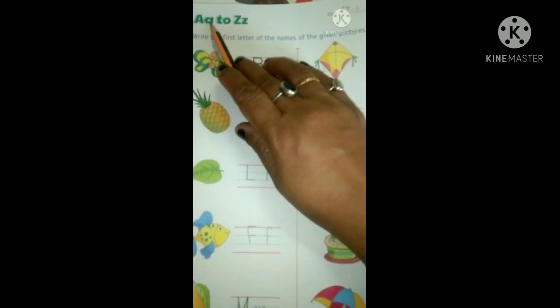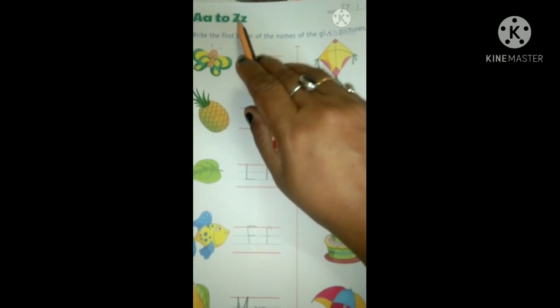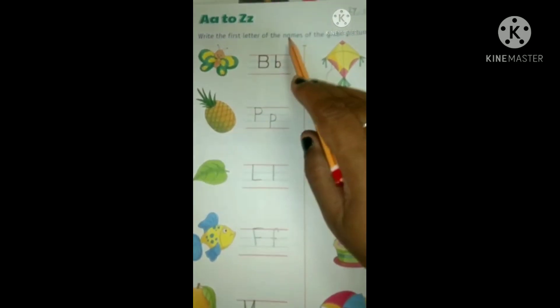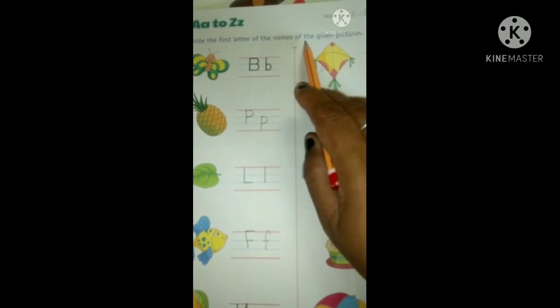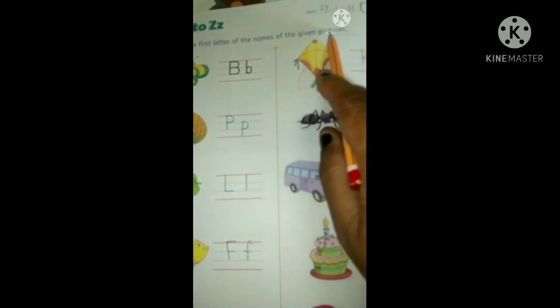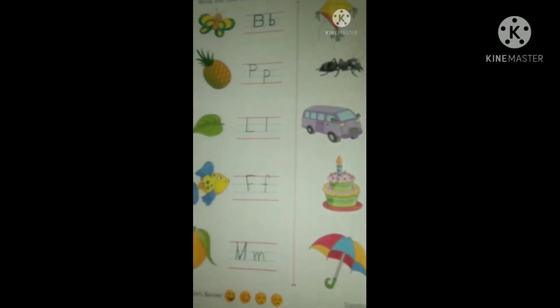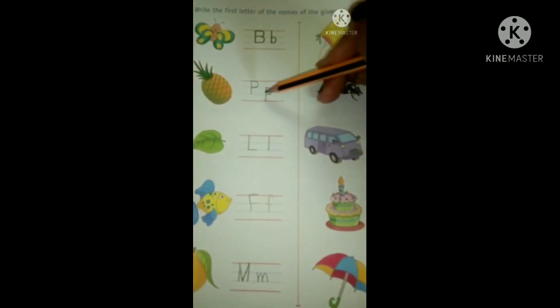Capital and small letter A to capital and small letter Z. Write the first letter of the name of the given picture. Now, you can see many more pictures are there and we have to write the names.